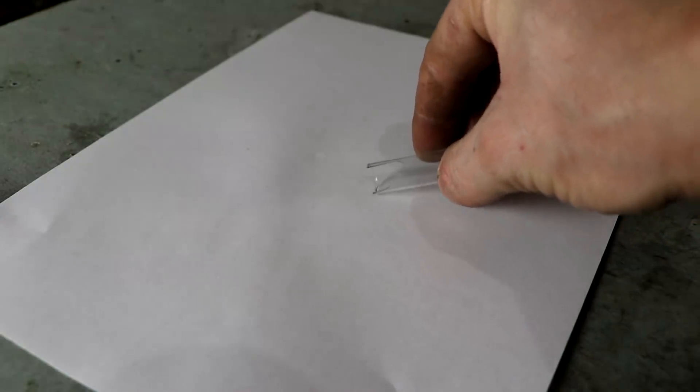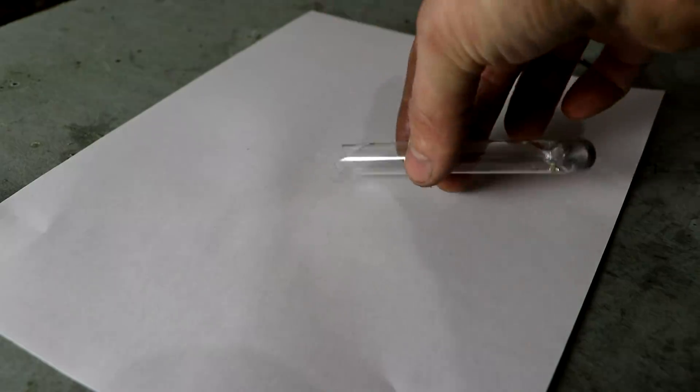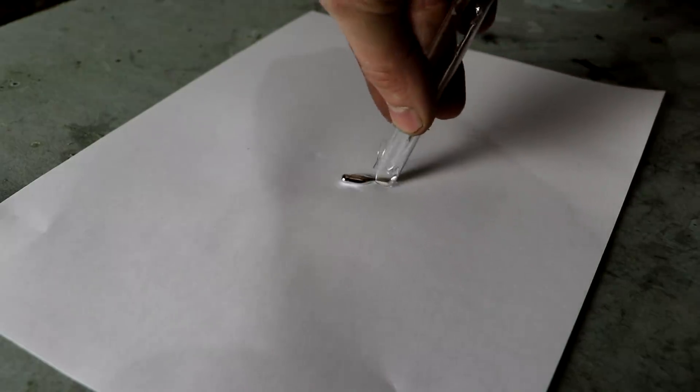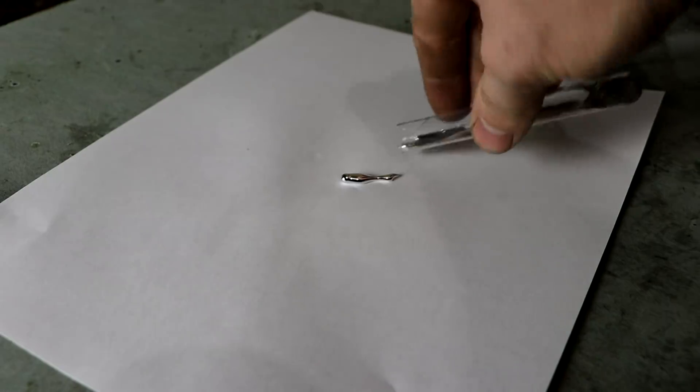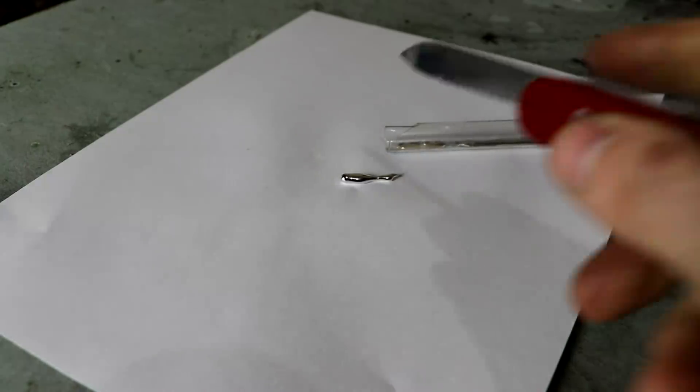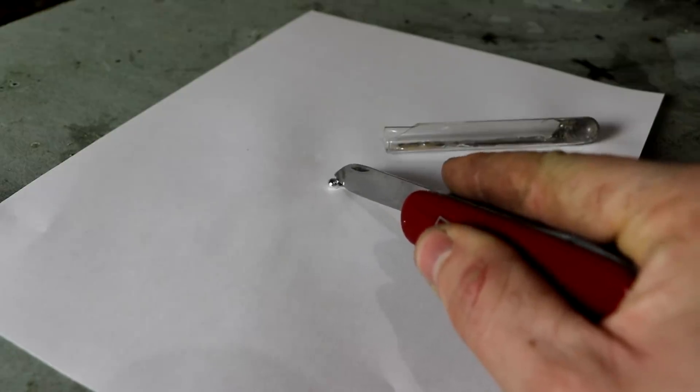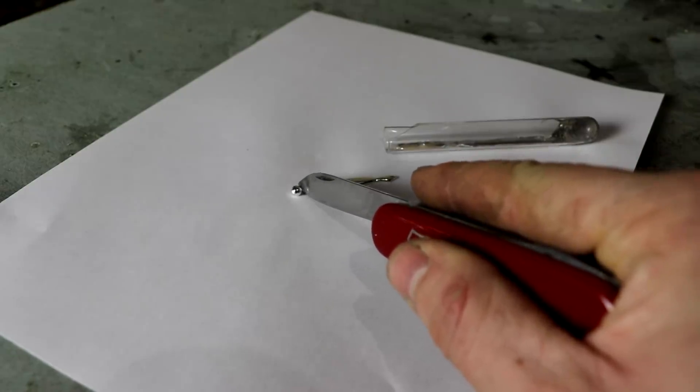Pour this out onto the paper. And if it will pour. There we go. Very high surface tension there. I don't want to touch it directly. There's the bead. Let's separate this from the rest of the gallium.